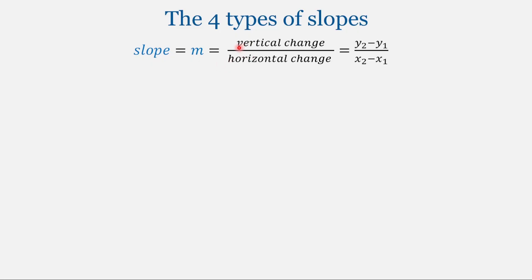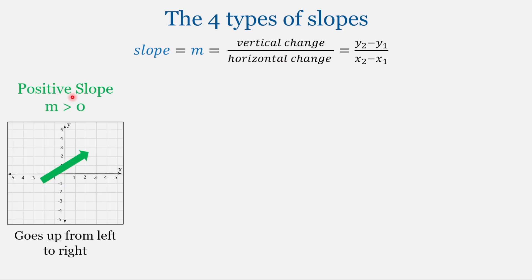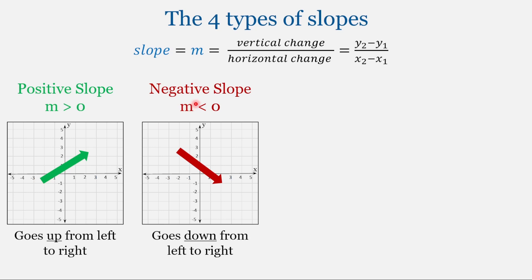The slope of a line is the ratio of the vertical change to the horizontal change. In the previous few videos, we have practiced finding the slope of a line, and we've already looked at two types of slopes. First is the positive slope — in this case, the value for the slope is a positive number, it's greater than zero. And when we look at this type of line, it's going to go up as we move left to right on the graph.